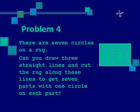Problem 4. There are 7 dots on a rug. Can you draw 3 straight lines and cut the rug along these lines to get 7 parts with 1 circle on each part?